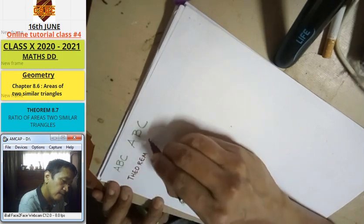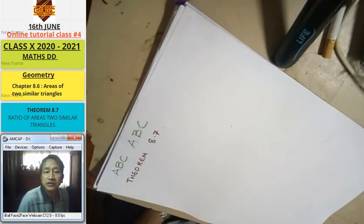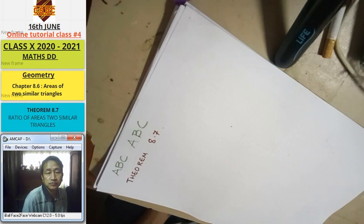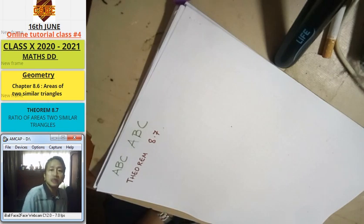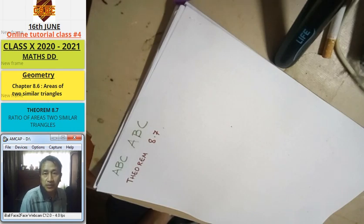Theorem 8.7: The ratio of the areas of two similar triangles is equal to the ratio of the squares on their corresponding sides.